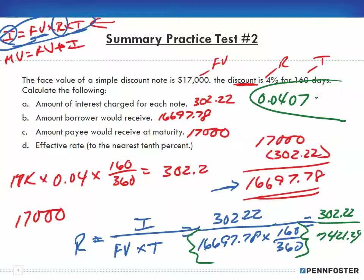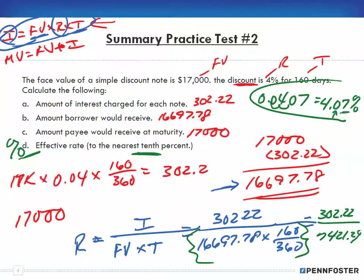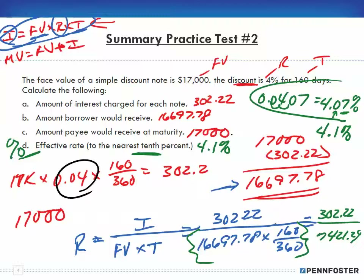Remember, that's a decimal and we want the effective rate as a percentage. It says round to the nearest tenth. We move the decimal two places to the right to get 4.07%. Since we're rounding to the nearest tenth, the 7 tells us to round up. So our effective rate is 4.1%. Now you can see why the difference matters: on the simple interest note in chapter 10, the interest rate was 4%, but the effective rate when you discount it is greater — 4.1%. The bank gets a more effective rate by discounting and taking out the interest upfront.